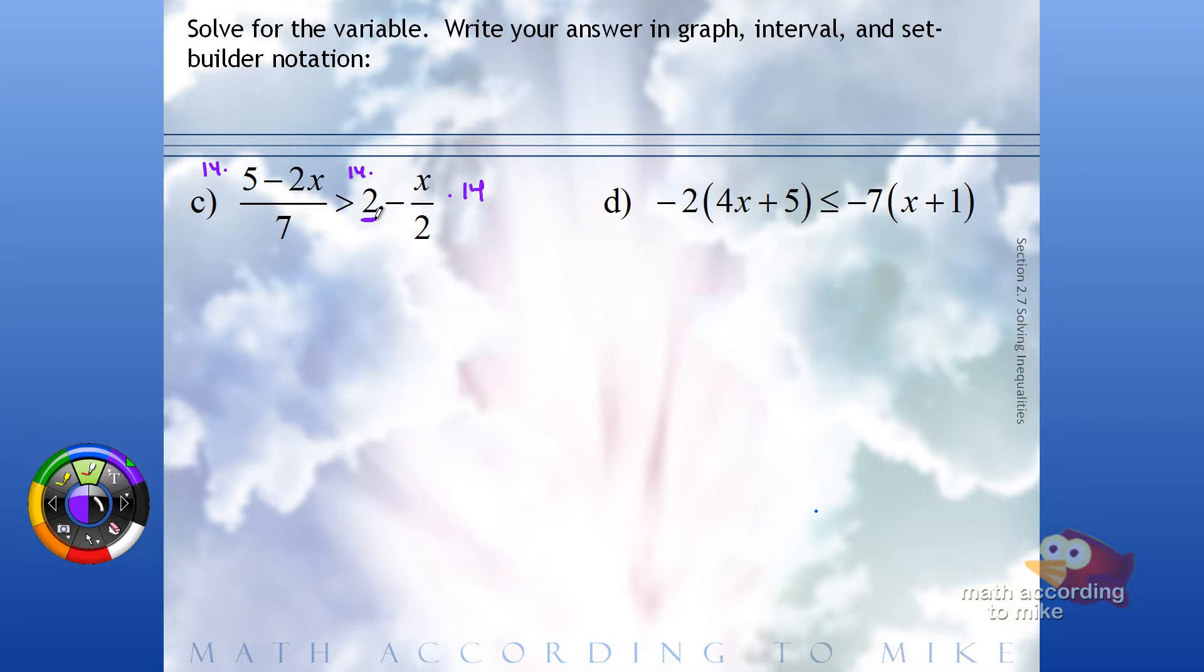Whatever you do to one side, you have to do to the other. So it's like you distributed that 14 through the right-hand side. Now be careful when you cancel. The 14 times this fraction, the 14 and the 7 will reduce down to a 2.